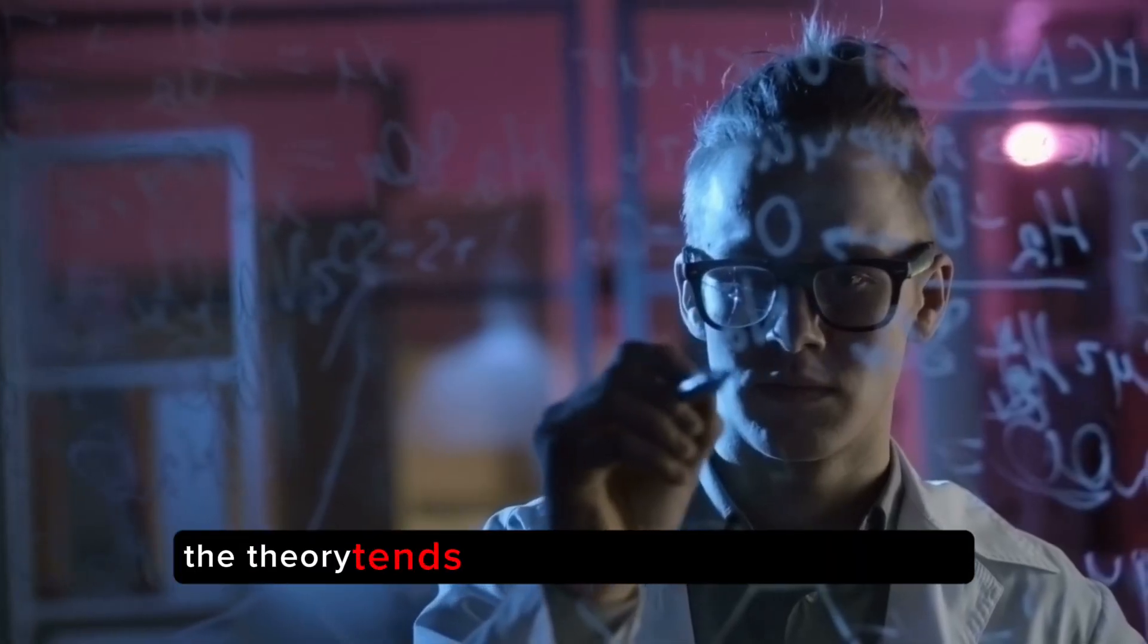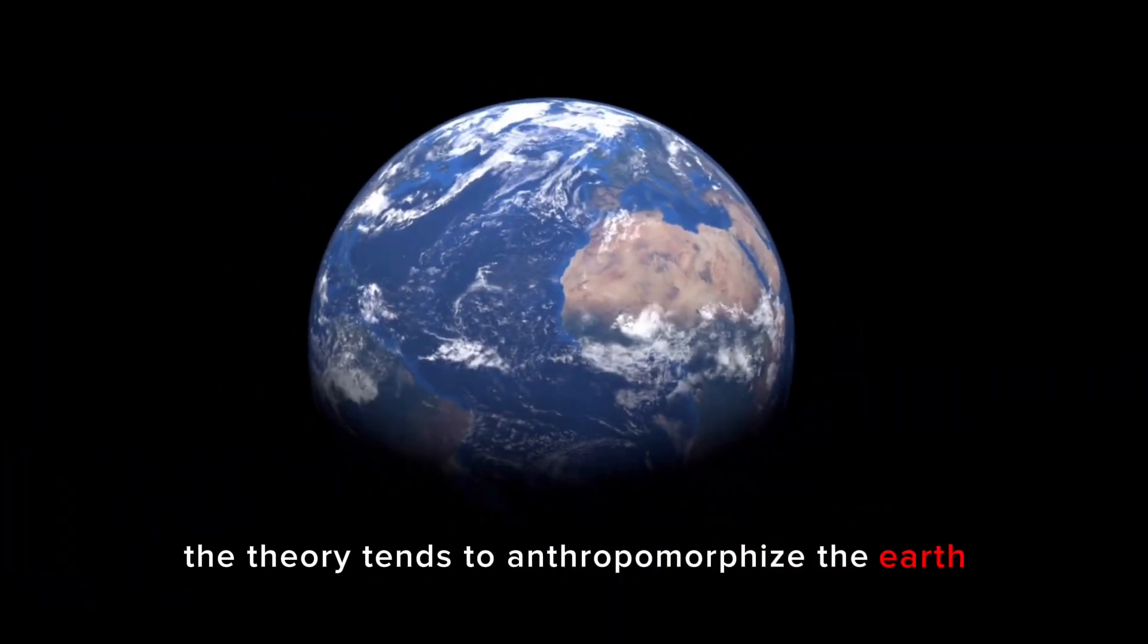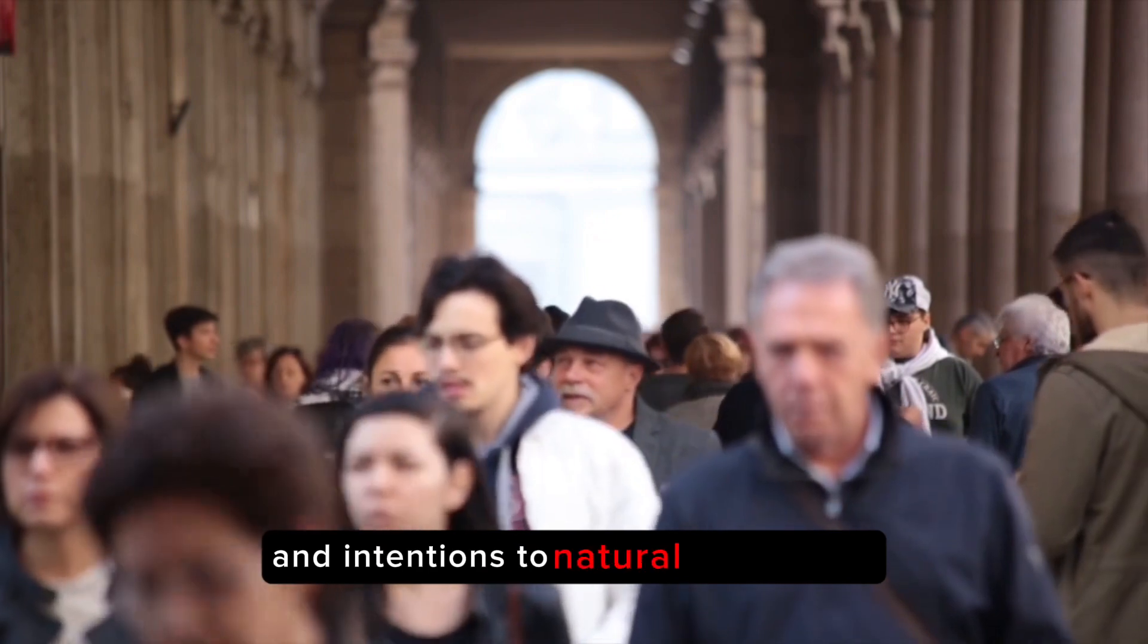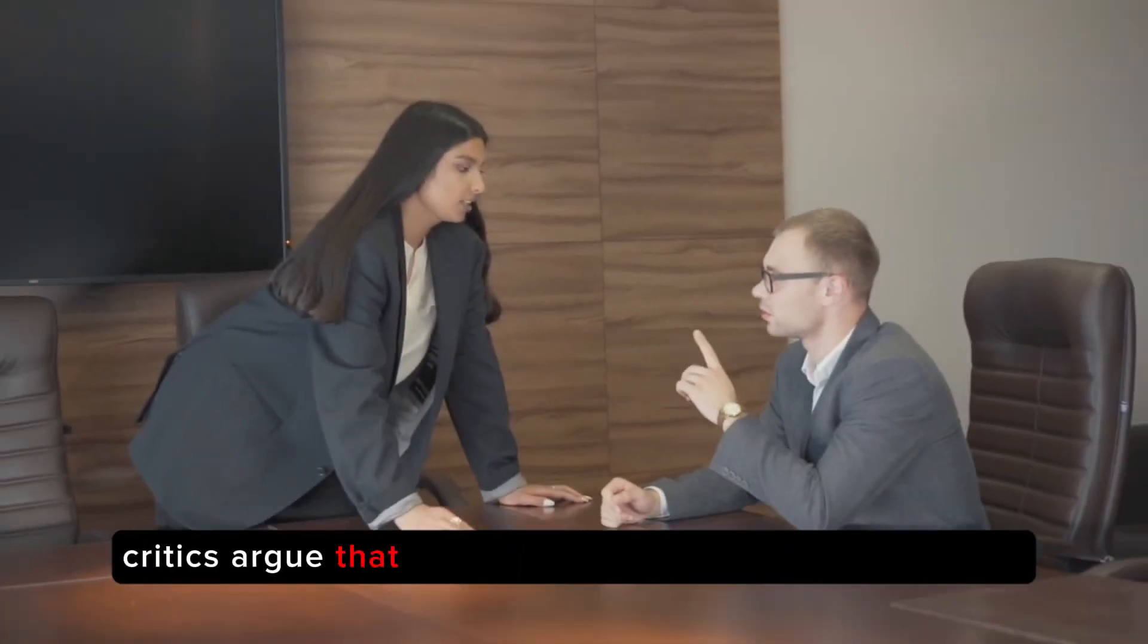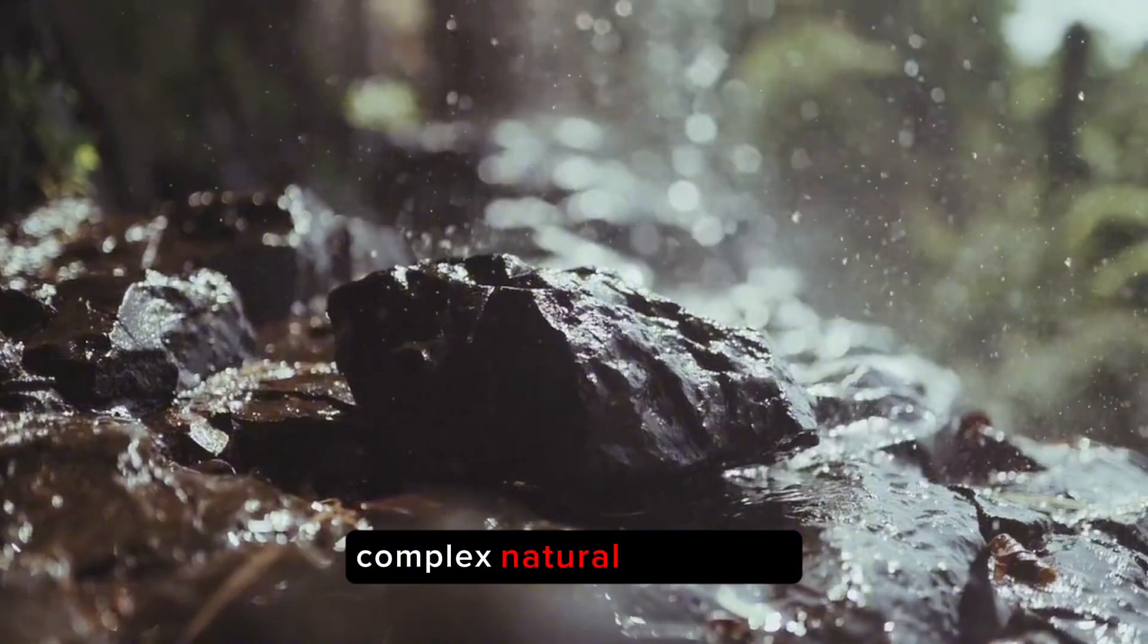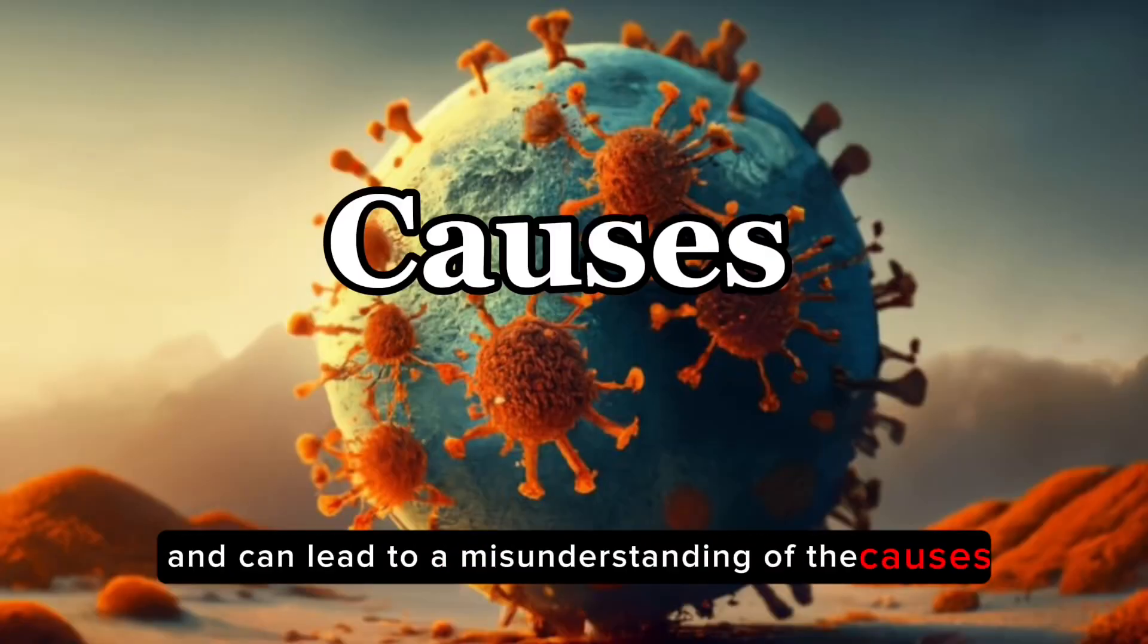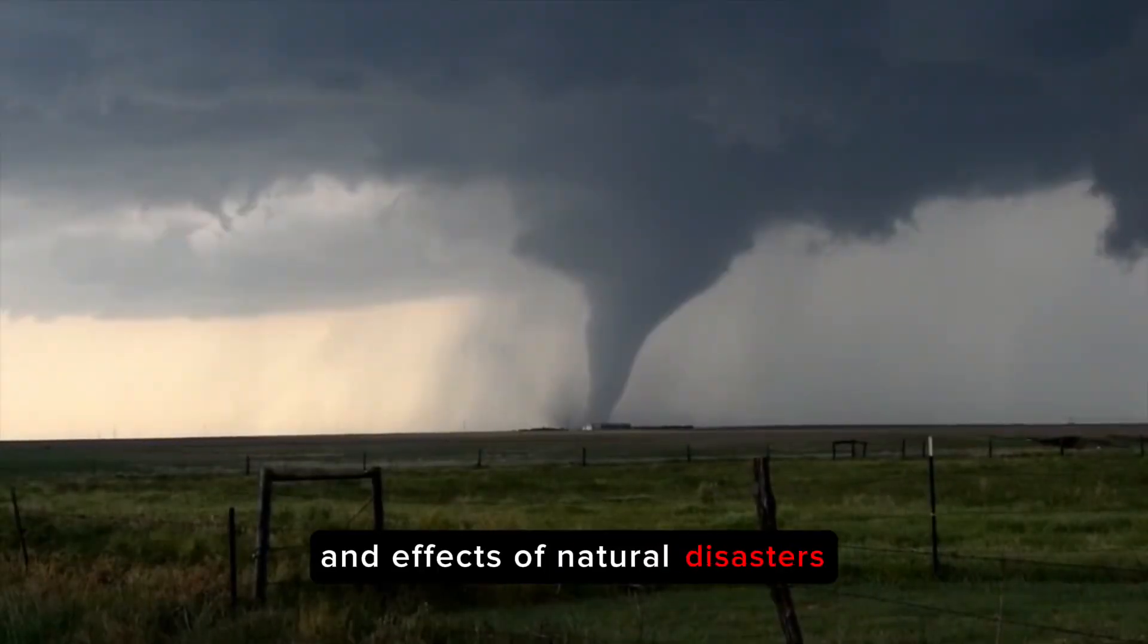The theory tends to anthropomorphize the Earth by attributing human-like qualities and intentions to natural phenomena. Critics argue that this anthropomorphism oversimplifies complex natural processes and can lead to a misunderstanding of the causes and effects of natural disasters.